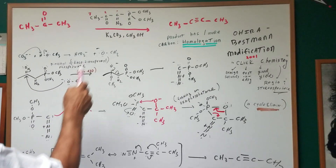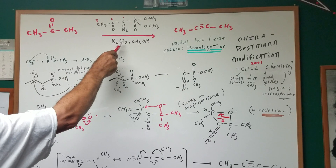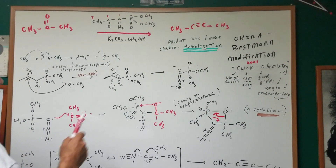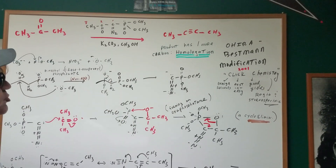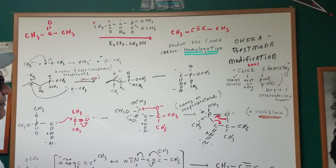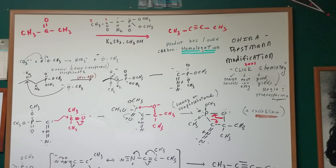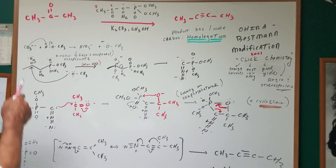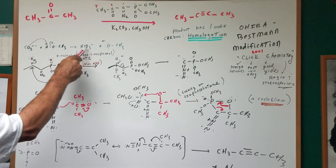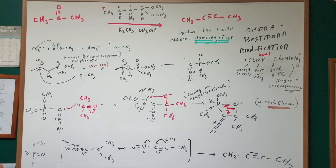I'm going to react this reagent with acetone in the presence of potassium carbonate and methanol, and I'm going to get a compound known as 2-butyne. Whenever a product has one extra carbon, we call it a homologation reaction — and that's something you should know. The carbonate deprotonates the alcohol to get bicarbonate and the nucleophile, which is methoxide. And that's where it starts from.